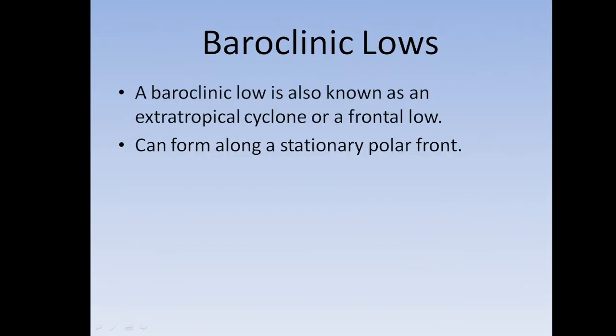Today we're going to cover baroclinic lows. Baroclinic lows are also known as an extratropical cyclone or a frontal low. When a hurricane — a barotropic system — moves on land, it becomes extratropical. If you hear that terminology, that means it's become baroclinic; the isotherms and isobars are out of phase. They can form along a stationary polar front.